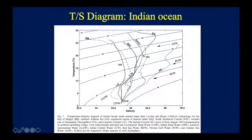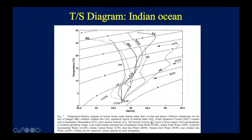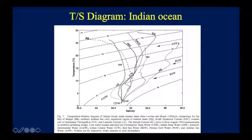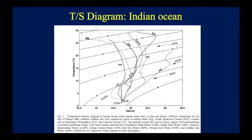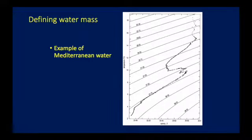From the TS diagram we can tell a lot about the water characteristics in any area. Here is an example from the Indian Ocean with many different data points. Take the Somali current (SC) — it's quite unique, with about four or five water masses. Arabian Sea Water (ASW) shows very high salinity and very warm temperatures, with three to four water masses in the water column. Temperature and salinity tells you how many types of water exist in that particular area.